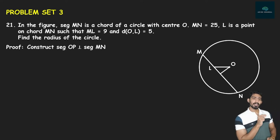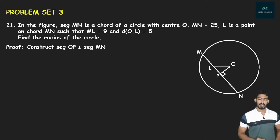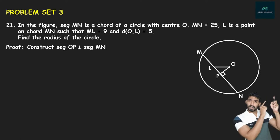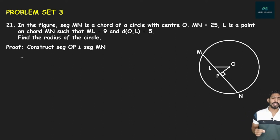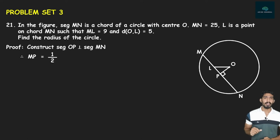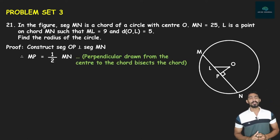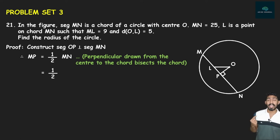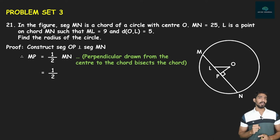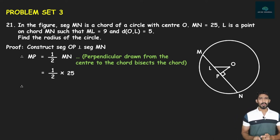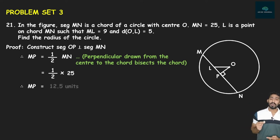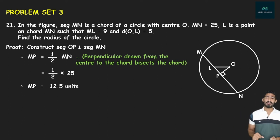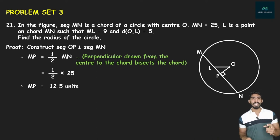आपको दिख रहा है OP perpendicular है MN के सब। सबको पता है: the perpendicular drawn from the center to the chord bisects the chord। तो MP is equal to half of MN। MN का value 25 है, तो MP = half of 25 = 12.5 units। यह है value of MP।